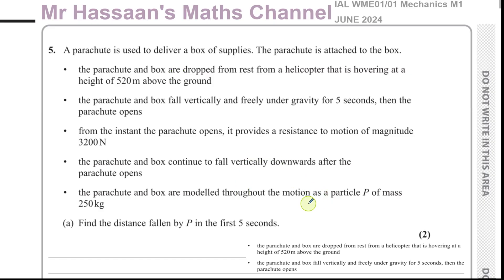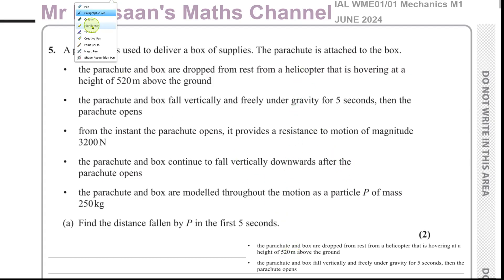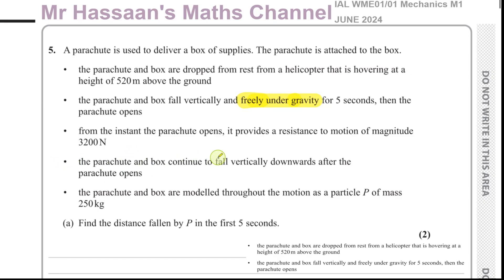This question involves a parachute which is used to deliver a box of supplies. The parachute is attached to the box. The parachute and box are dropped from rest from a helicopter hovering at a height of 520 meters above the ground. They fall vertically and freely under gravity for five seconds. Then the parachute opens, and from that instant it provides a resistance to motion of magnitude 3200 newtons.